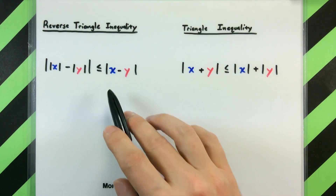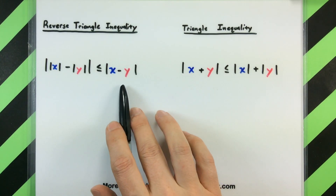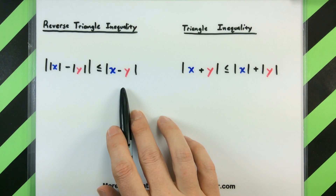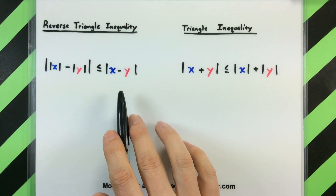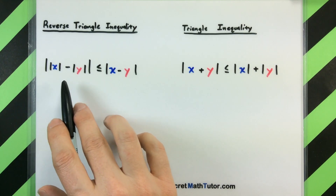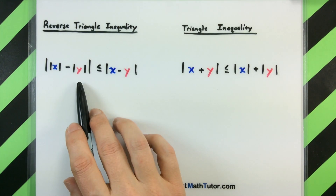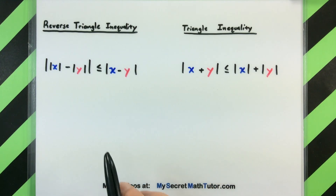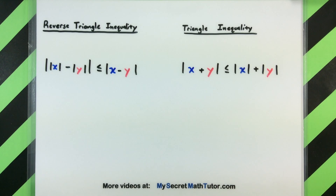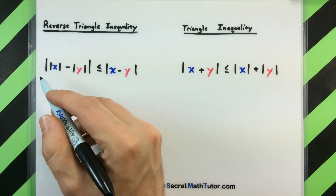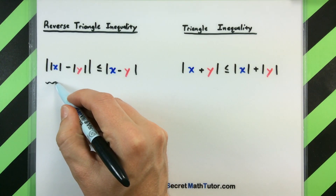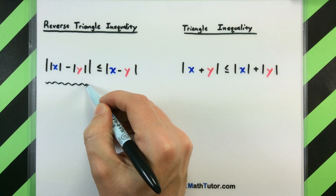In the reverse triangle inequality we're doing something very similar. I like to think of starting with the quantity on the left — the absolute value of x minus y — and if I want to break it up into each individual quantity, so the absolute value of x minus the absolute value of y, it will be bigger than that. The way we package that up is that it's bigger than the absolute value of (the absolute value of x minus the absolute value of y).